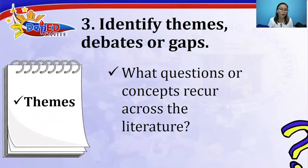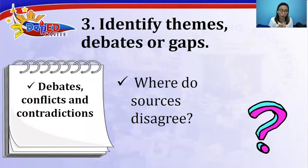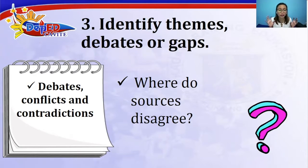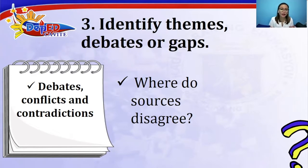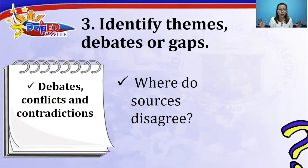Second, look for themes — what questions or concepts recur across the literature? Identify what themes are common during your search. Third, look for debates, conflicts, and contradictions — where do sources disagree? For example, Study A says it is effective while Study B says it is not. You can include both, stating that Cruz said one thing, but on the contrary, Abad said another. So we identify the debates or contradictions on the same topic where studies say different things.